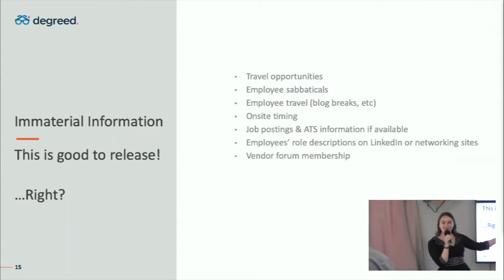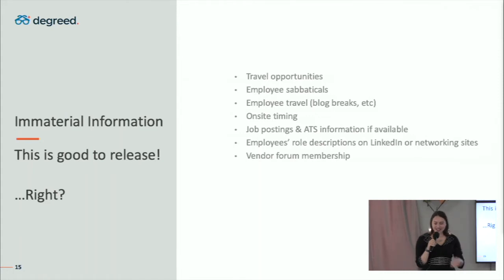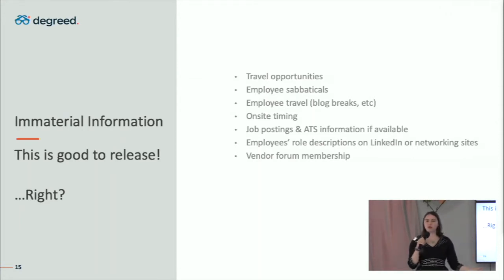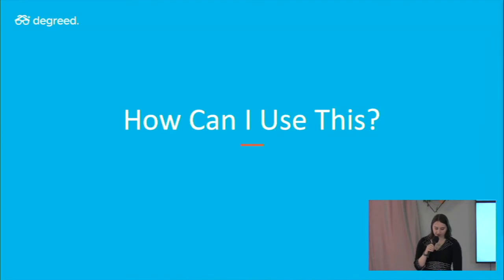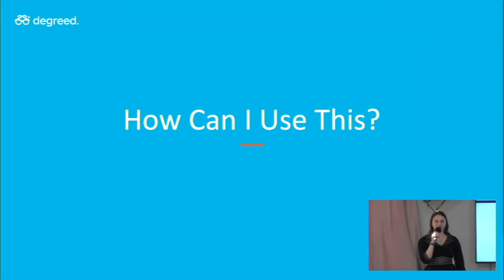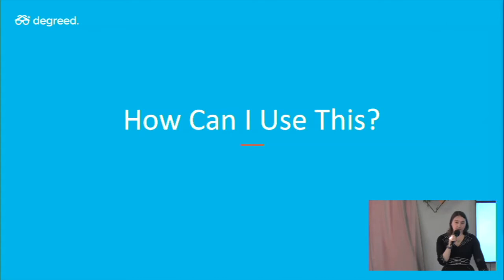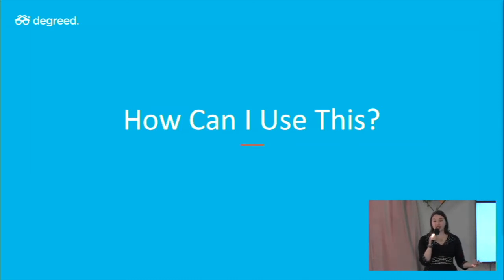But then there's also immaterial information that you definitely want to release so you can promote your company — travel opportunities, employee sabbaticals, on-site timing, job postings, and information in your applicant tracking system you want to release internally to promote your openings and show people what a great place this is to work. Some of you may have already encountered a situation where you released travel schedules and someone noticed an executive was out of office and took that as an opportunity for spear phishing, or similar situations where something that seemed harmless wasn't covered in security training — or was an offhand mention — and then caused a serious problem of the material non-public kind later on.